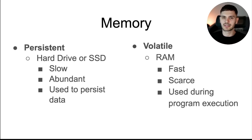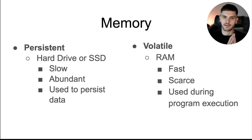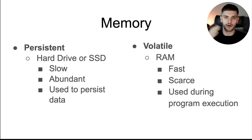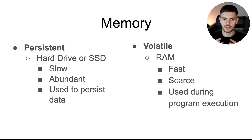Persistent memory is used to persist data — for example, files. When you turn off your computer and turn it back on, your files are still there. Volatile memory is used during program execution. For example, a program might have variables which hold data, and that data is stored in volatile memory. It's called volatile because if the computer turns off in the middle of your program executing, all that data will be lost. Volatile and persistent memory work together — for example, a web server uses volatile memory while running, but it may also connect to a SQL database where new records are saved in persistent memory. When talking about memory management, what we need to manage is how our program uses volatile memory while executing.